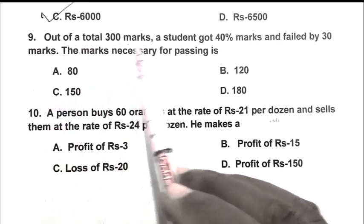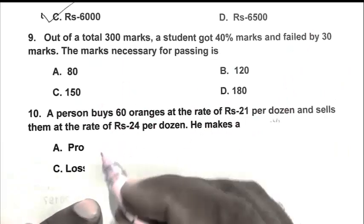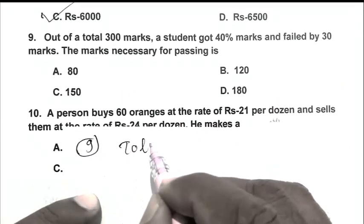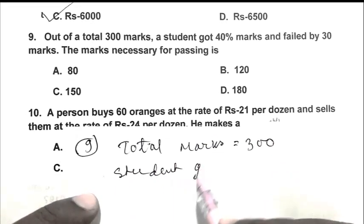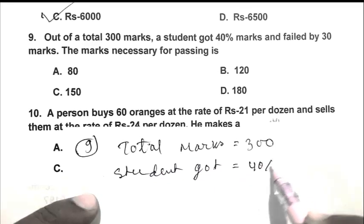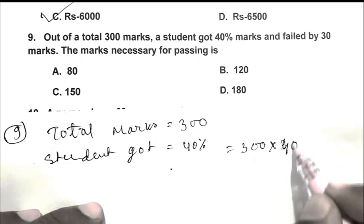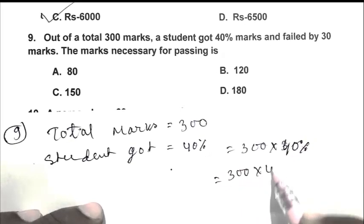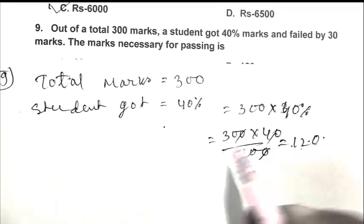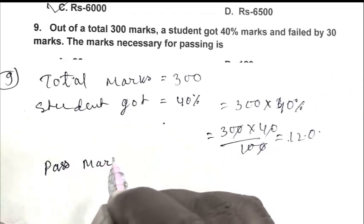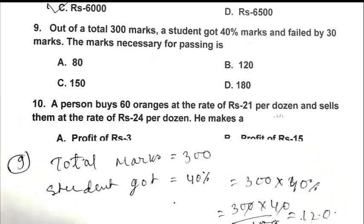Q9. Out of a total 300 marks, a student got 40% marks and fell by 30 marks. The marks necessary for passing is. So friend, 300 student got 40% that is 300 multiplied 40% that is 40 upon 100, 120 marks. So friend the student got 120 marks and failed by 30 marks. So pass mark is 120 plus 30 that is 150. So friend C is the right answer.